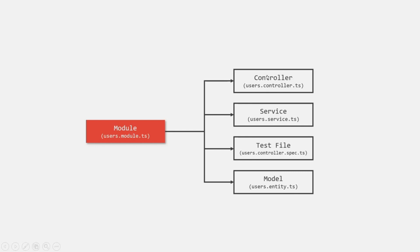Instead, the business logic will be present inside the service file. So the service file will contain all the actual business logic for each type of request, and it will create a proper response for each type of request. Then the controller.spec.ts file is basically a test file which will contain the test logic for testing your controller. For a module file, we can also have an entity.ts file or schema.ts file, which we will talk about later in this course. But the controller and service file are the two main files for a module.